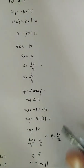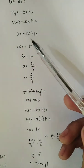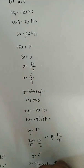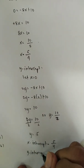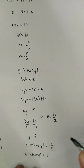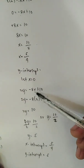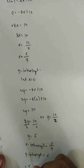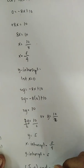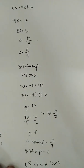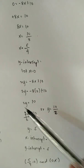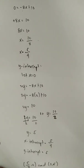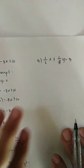For the equation 2y equals negative 8x plus 10, the x-intercept is 5 over 4 and the y-intercept is 5. The graph of this equation intersects the x-axis at (5/4, 0) and the y-axis at (0, 5). These are the points where the graph crosses both axes.